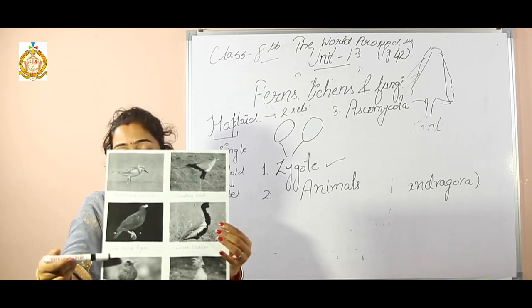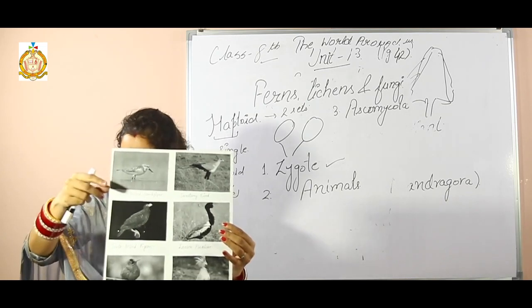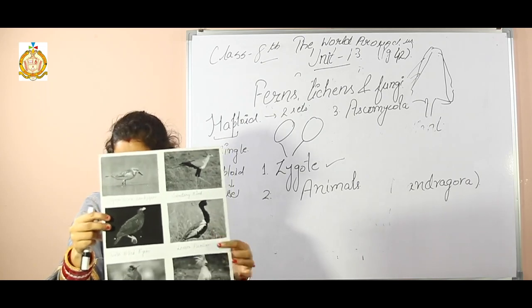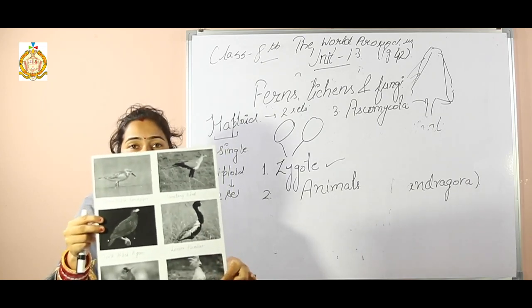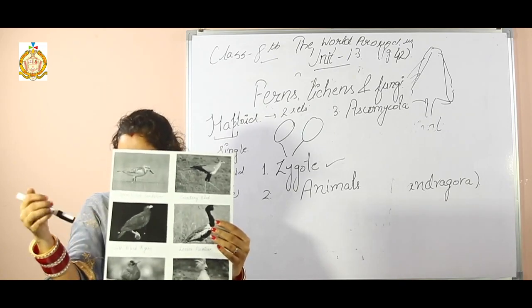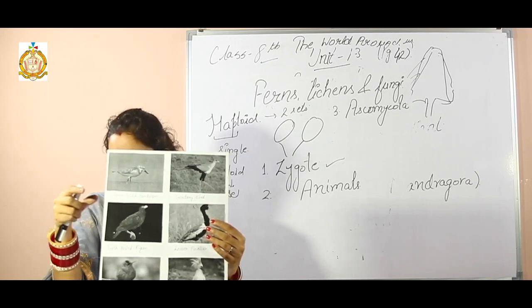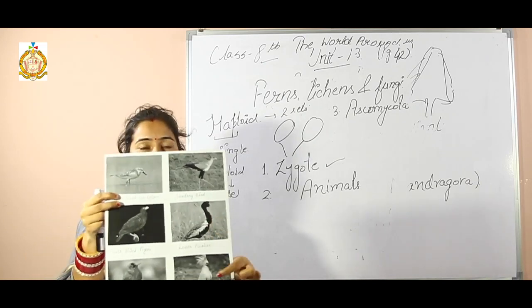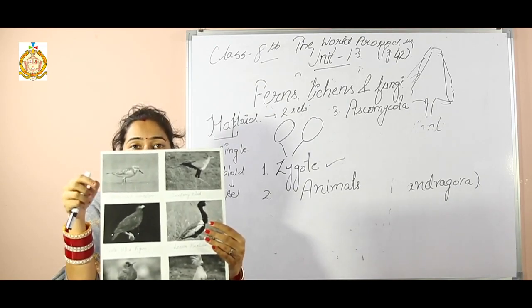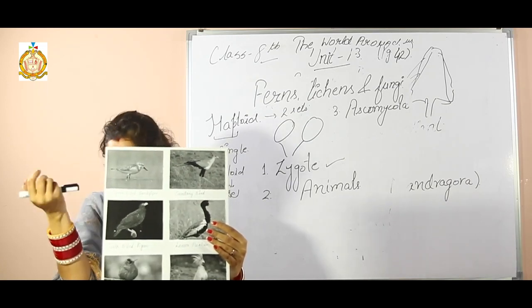The last bird is Kagu. It is a highly unusual, almost flightless bird that resembles something between a small heron and a rail. Due to its startling ash-white plumage, it is locally known as a ghost of the forest because its picture is like a ghost.